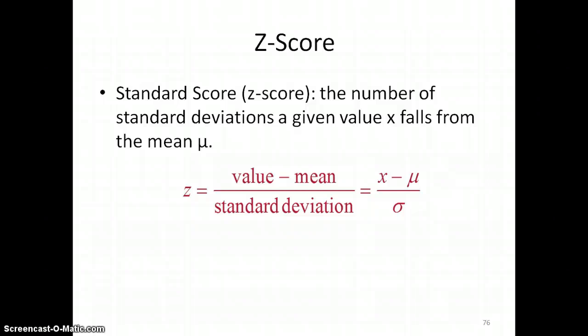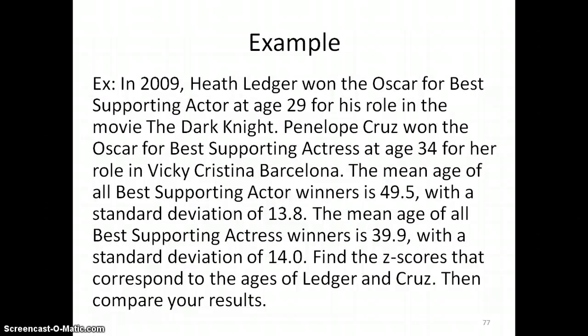Let's look at an example to make sure you know how to use this formula. In 2009, Heath Ledger won the Oscar for Best Supporting Actor at only age 29 for his role in The Dark Knight, and Penelope Cruz won the Oscar for Best Supporting Actress at age 34 for her role as Vicky Cristina Barcelona.